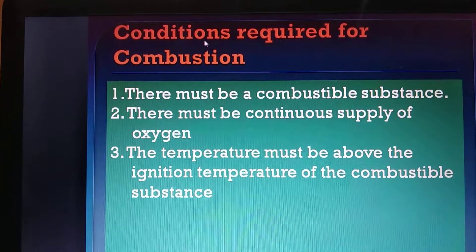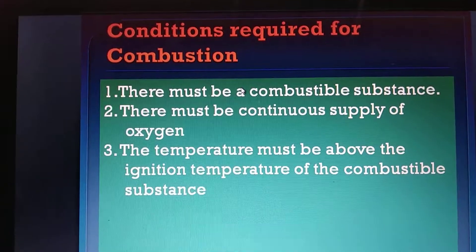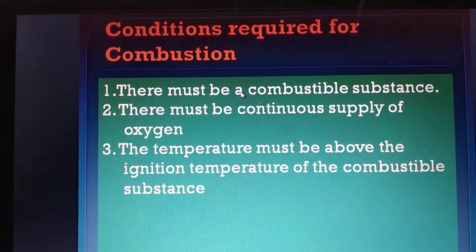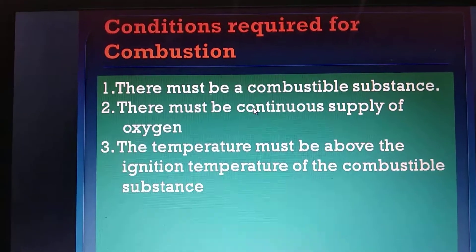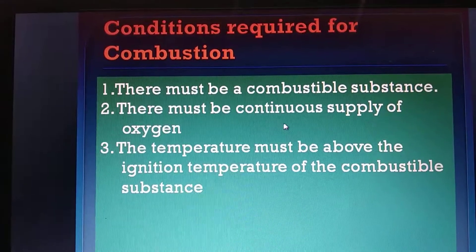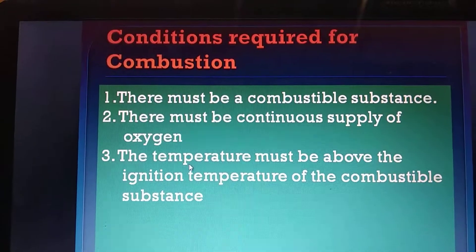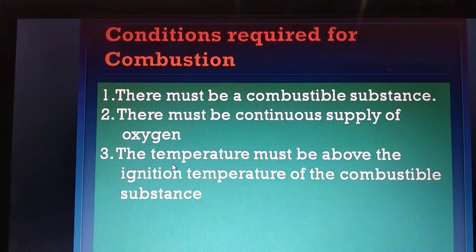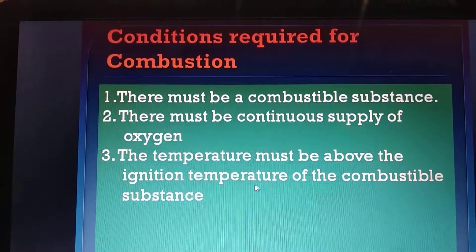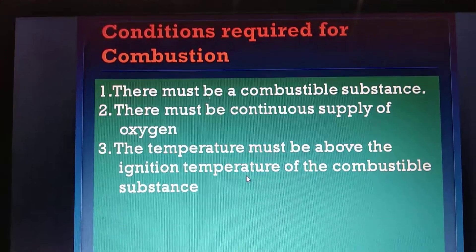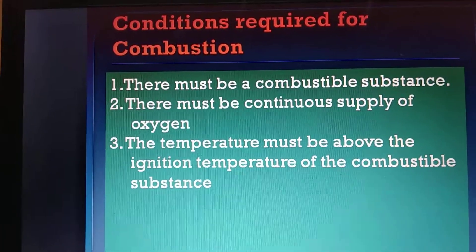Let us have a look at the conditions required for combustion. The first condition is that there should be a combustible substance. Second, there must be a continuous supply of oxygen. And the third condition for combustion to take place is that the temperature must be above the ignition temperature of the combustible substance. Let us study these conditions one by one by performing certain activities.